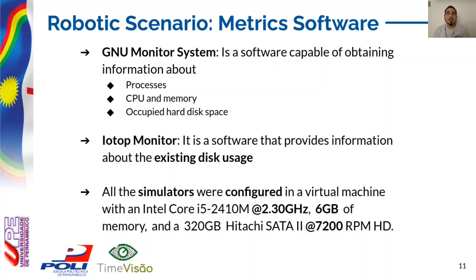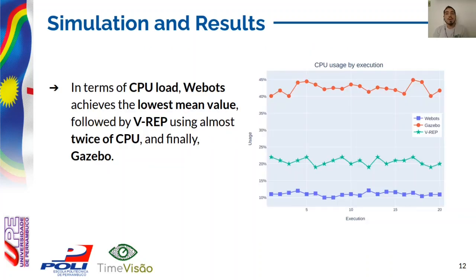All the simulators were configured in a VirtualBox version 2 virtual machine, set up with an Intel Core i5 at 2.3 GHz, 6 GB of memory, and a Hitachi SATA 2 at 7200 RPM hard disk drive. The selected OS was Ubuntu 18.04 due to its broad community support and compatibility with the simulation software and ROS. The NAO navigation behavior was executed by each simulator separately to measure its evaluation components. Each component presented the same impact in the overall comparison, meaning all components are equally weighted.